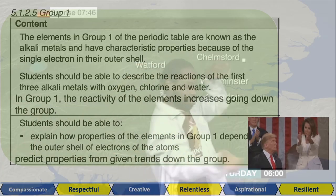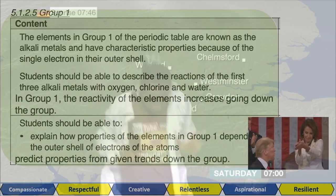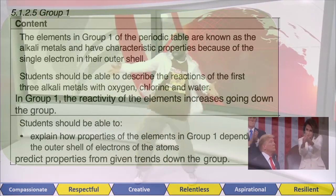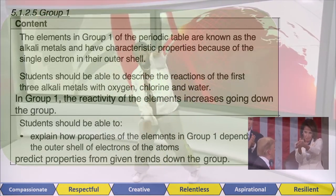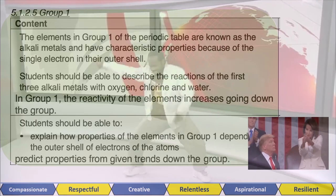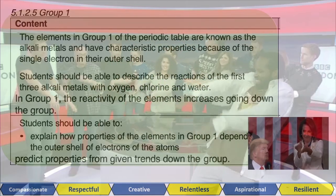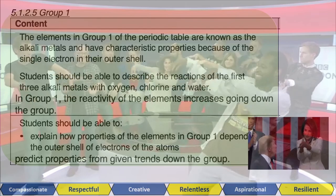And there we go. Lesson done. We looked at the group one trends in physical and chemical properties. Use the timestamps to skip to what you want to look at again. Check out the flashcards that I have in the description and also my revision timetable. And I'll catch you guys in a bit.